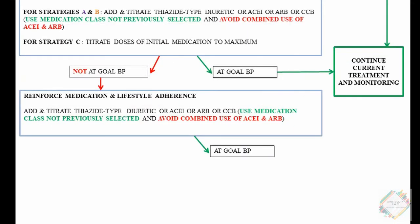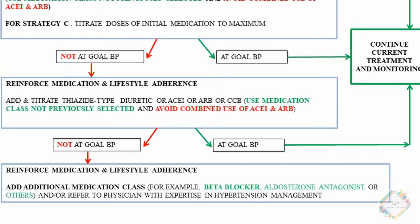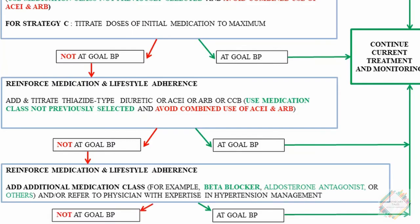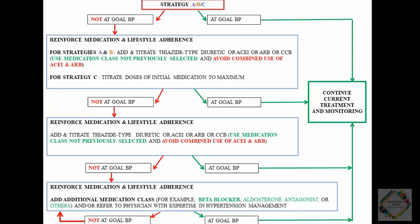Again, if the goal BP has been attained, we continue current treatment and proceed with further monitoring. If it has not been attained, we reinforce medication and lifestyle adherence and add an additional medication class — for example, a beta blocker, aldosterone antagonist, or any other antihypertensive therapy — and/or refer to a physician with expertise in hypertension management. If the goal is still not attained, we repeat the last step: adding additional medication classes such as a beta blocker or aldosterone antagonist.